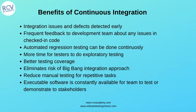Automated regression testing can be done continuously. With each build you can trigger automated regression testing, which can happen on a nightly basis or at whatever frequency you set for the project. This provides more time for testers to do exploratory testing, once you have the CI process set up and regression tests automated and running nightly.